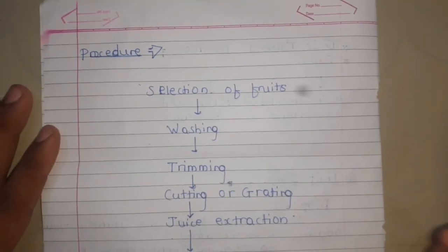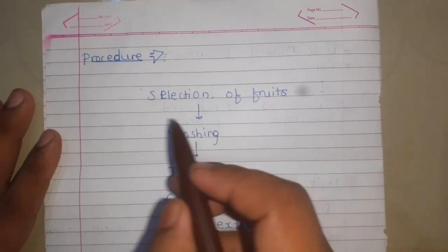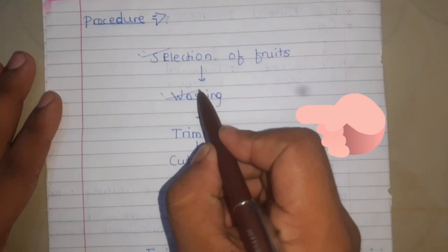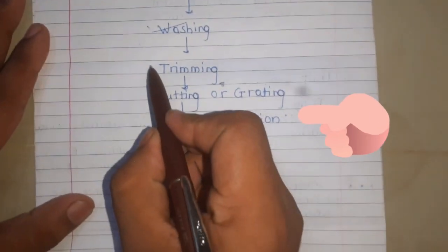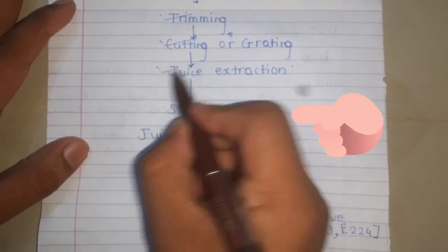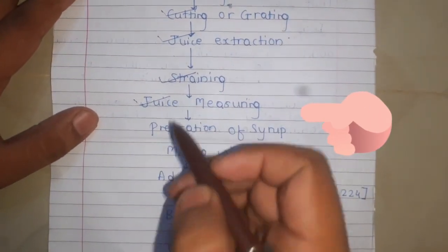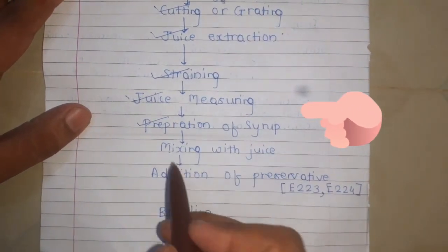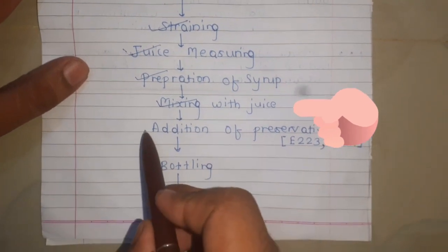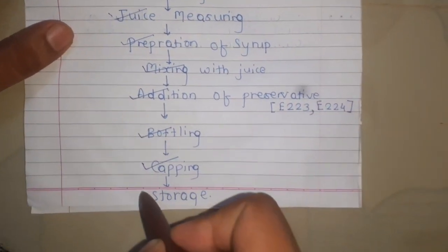Now we will study the procedure of fruit juice. The steps are: selection of fruits, washing of fruits, trimming of fruits, cutting or grading, juice extraction, straining, juice measuring, preparation of syrup, mixing the juice, addition of preservatives, bottling, capping and storage.